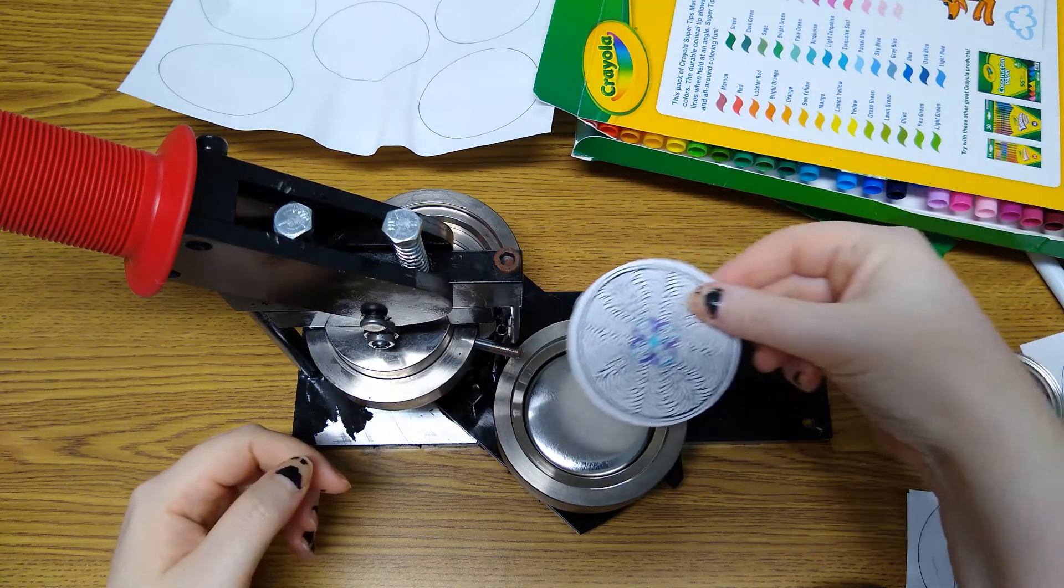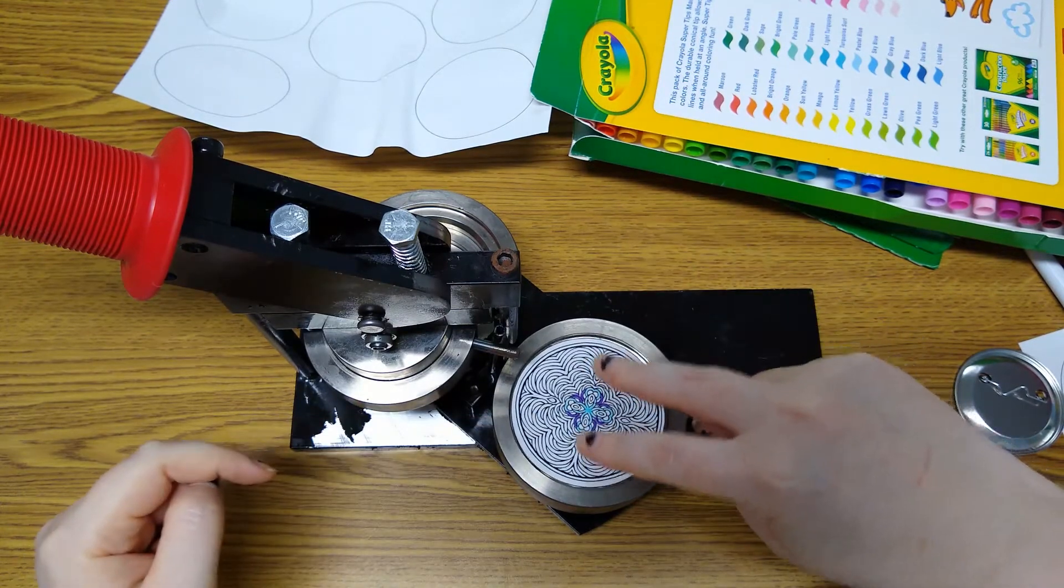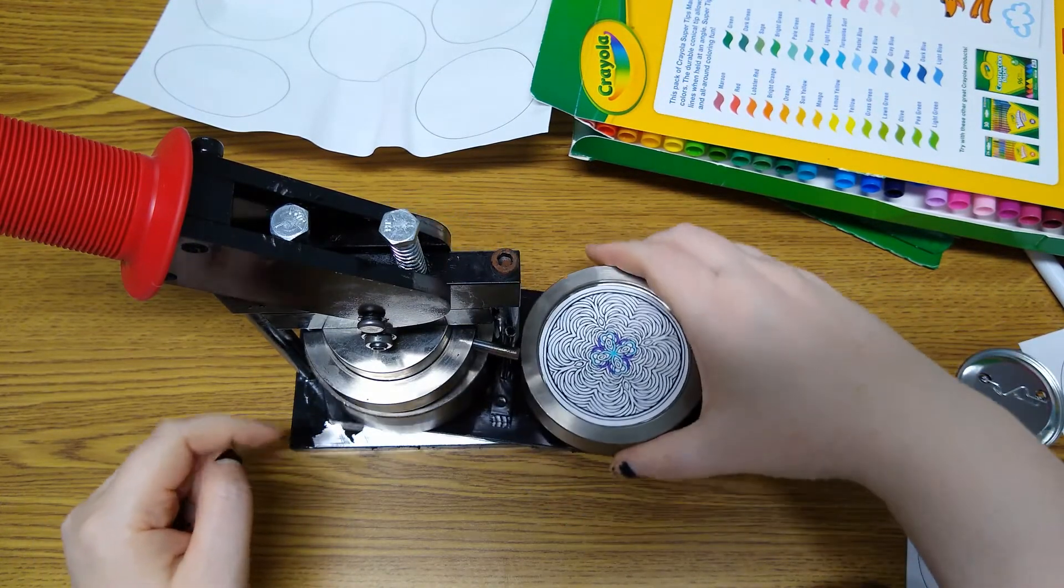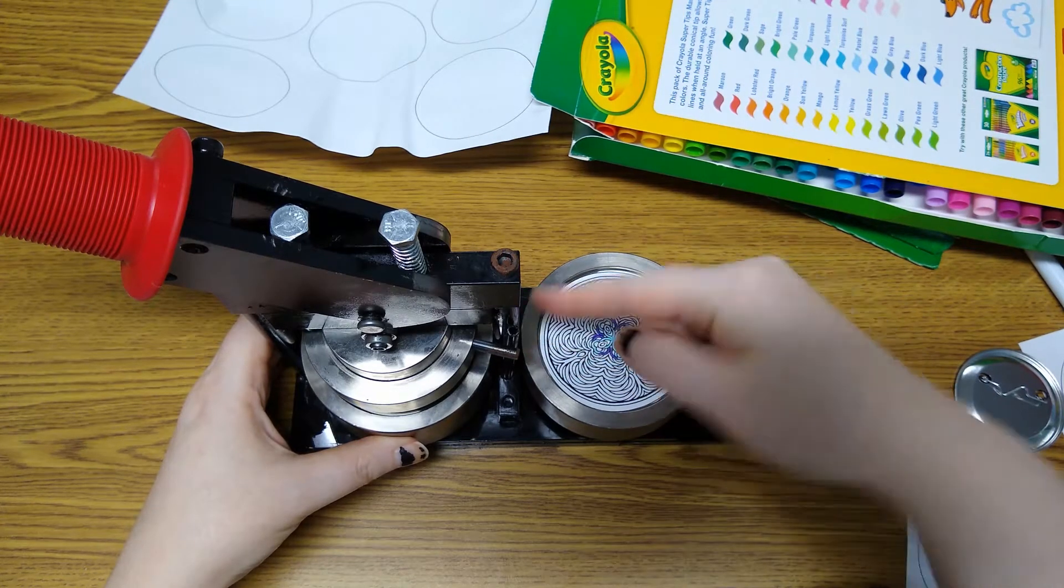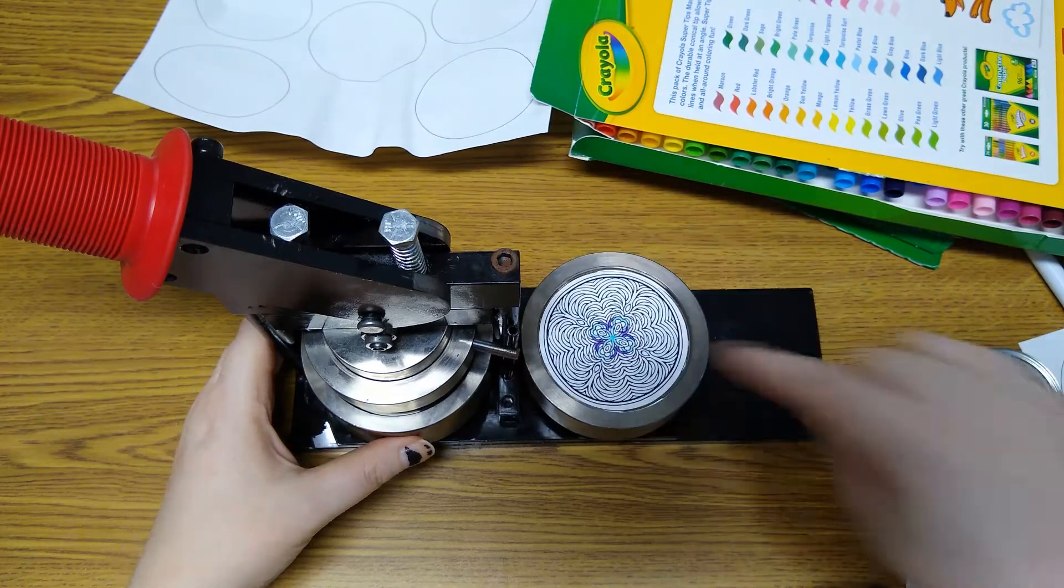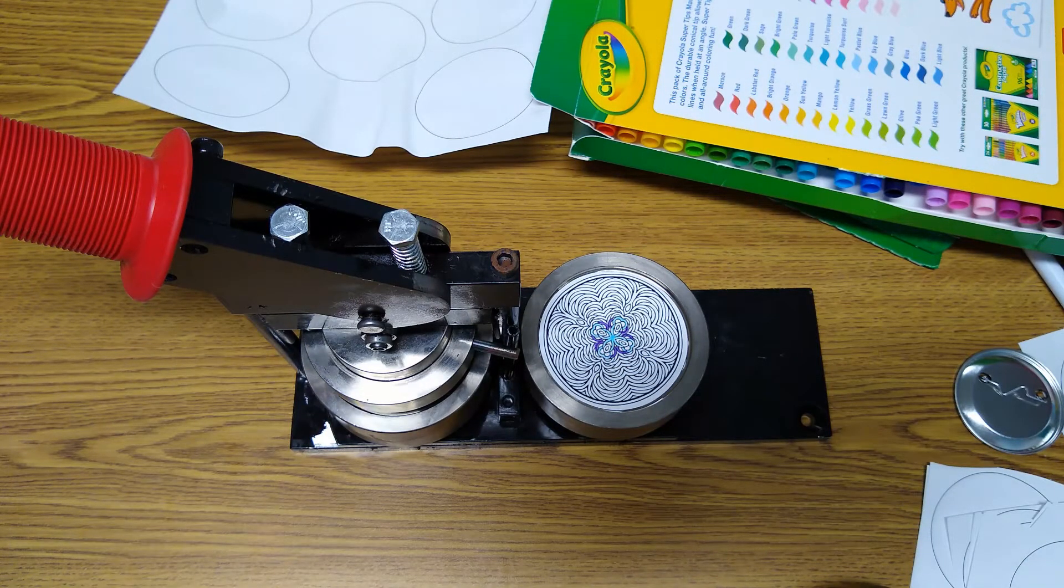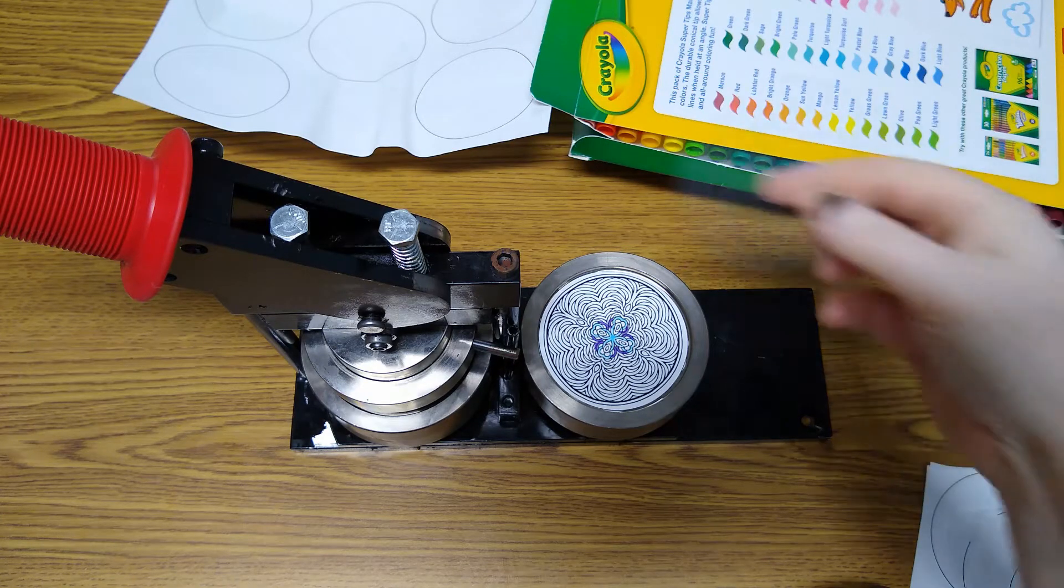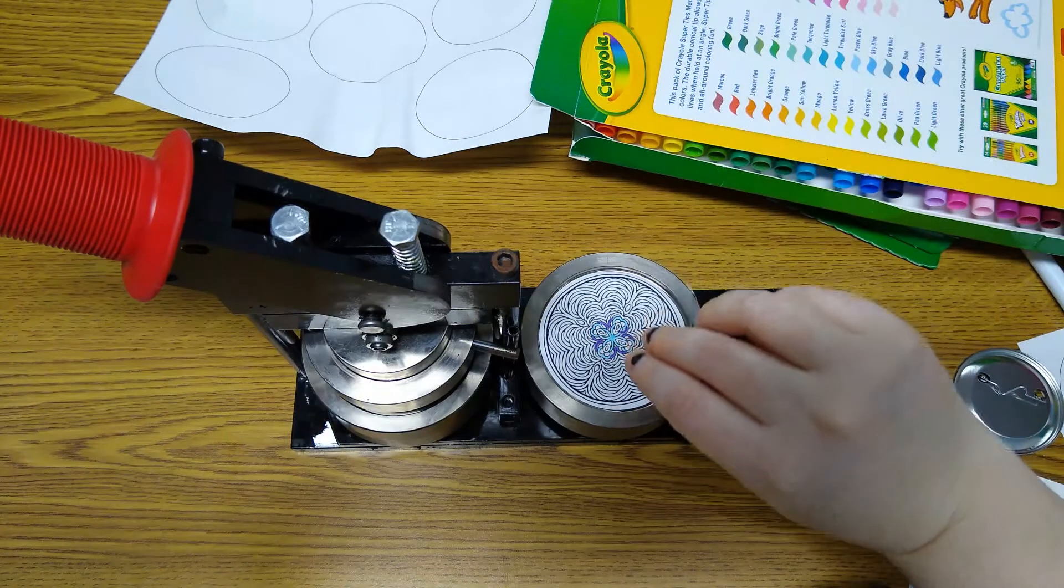Then you're going to take your button paper and put it on there. Now the top of the button, if it matters, is going to be facing the center pole here. Once you've got the paper on there, you're going to take one of the plastic films, which is kind of hard to see because it's clear, and you're going to put that on top.